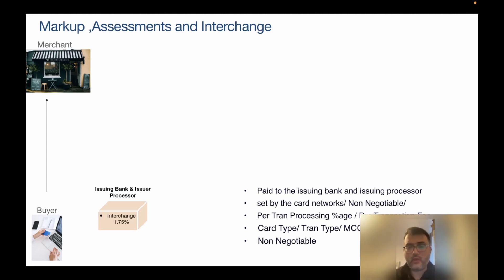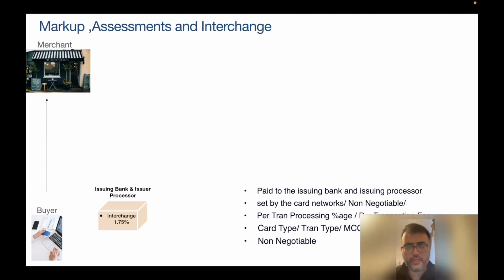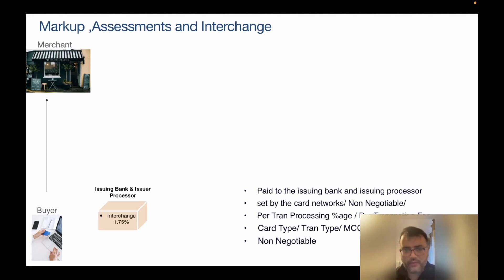Interchange is calculated as a per-transaction processing percentage or a per-transaction fee, depending on the model. It also depends on the card type, the transaction type, and the MCC — the Merchant Category Code. For certain merchants there's a different interchange rate, so many factors determine which interchange slab a particular transaction falls into.